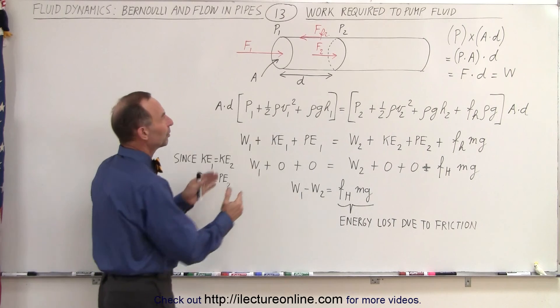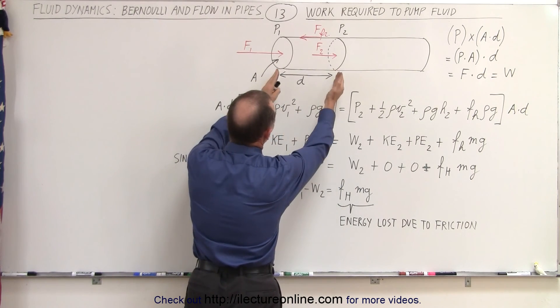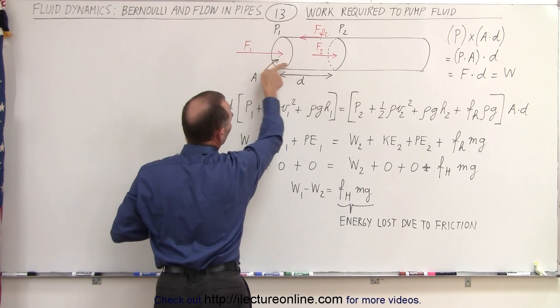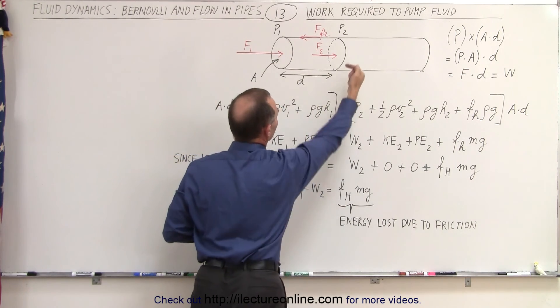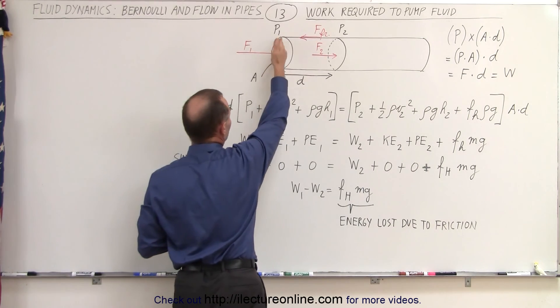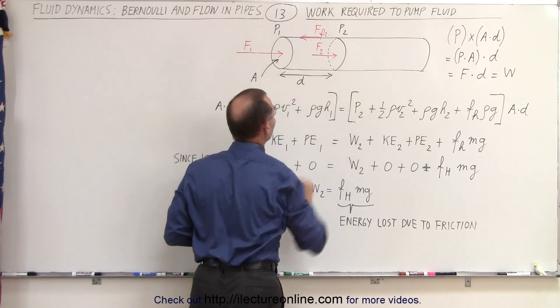So what we're going to do is we're only going to take this small section of fluid right here with the distance d inside the pipe. We have a certain amount of force pushing over here, a certain amount of force pushing over here, and friction force pushing back which means we have pressure p1 over here and pressure p2 over there.